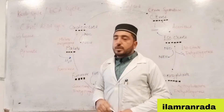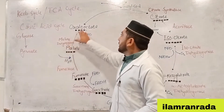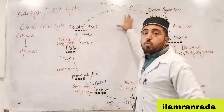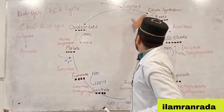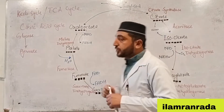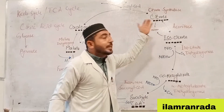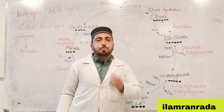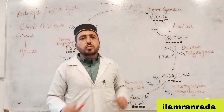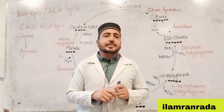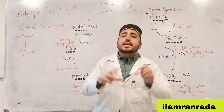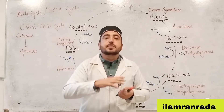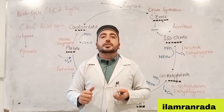The Krebs cycle begins with the four-carbon compound oxaloacetate. The end product condenses with acetyl CoA. The first step of the Krebs cycle connects to glycolysis, where glucose is broken down step by step to pyruvate, releasing energy.